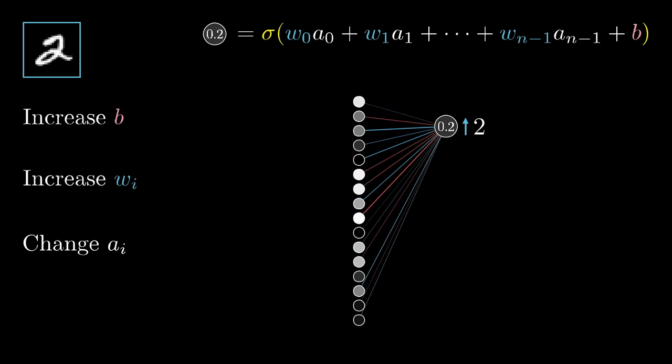Focusing just on how the weights should be adjusted, notice how the weights actually have differing levels of influence. The connections with the brightest neurons from the preceding layer have the biggest effect, since those weights are multiplied by larger activation values. So if you were to increase one of those weights, it actually has a stronger influence on the ultimate cost function than increasing the weights of connections with dimmer neurons, at least as far as this one training example is concerned.